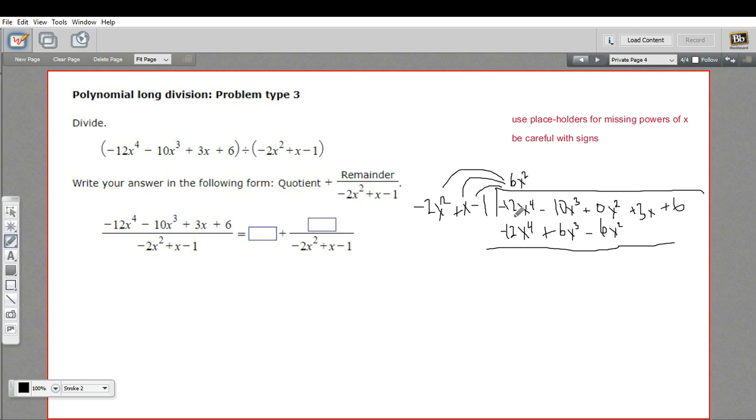Then we do our subtraction. And this is where it can get confusing with the signs. We are subtracting every one of these terms from every one of these terms. So this is negative 12x to the fourth minus a negative 12x to the fourth. That comes out to 0. Good. That's what we wanted. Then here we have negative 10x cubed minus 6x cubed. That's negative 16x cubed. And here we have 0x squared minus a negative 6x squared. That's positive 6x squared. Okay. So we've done our subtraction. We've been careful about the signs. Then we pull down our next term. So we add this 3x here.